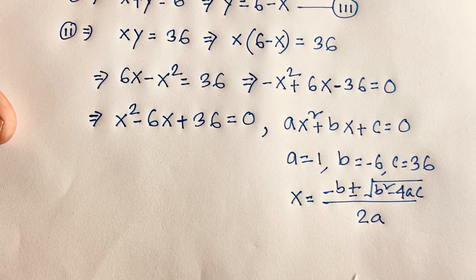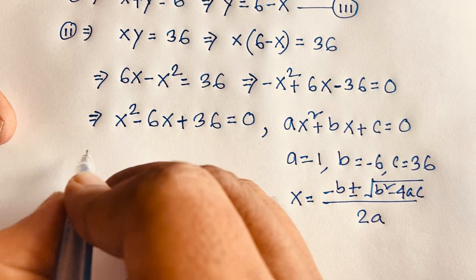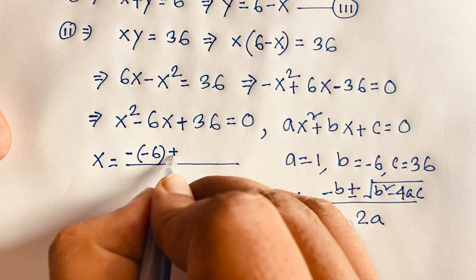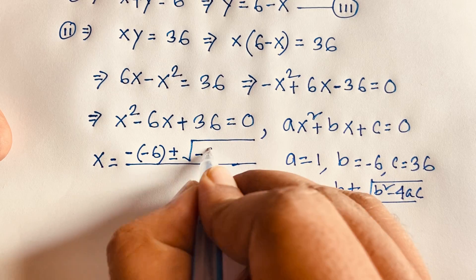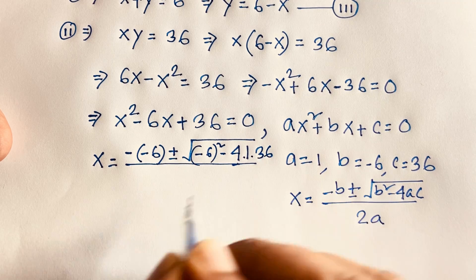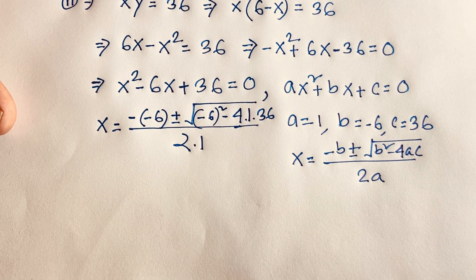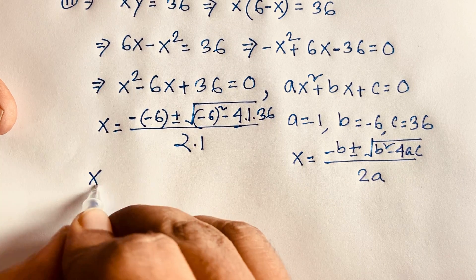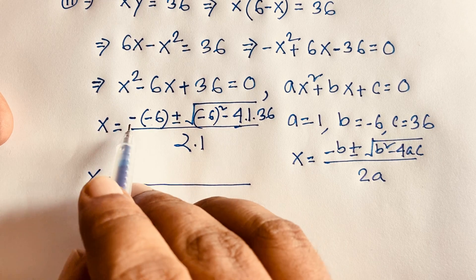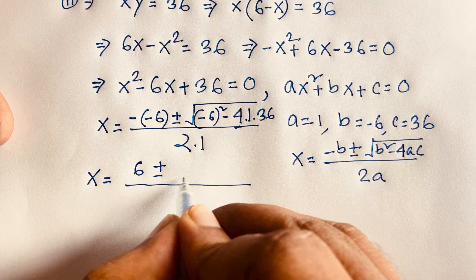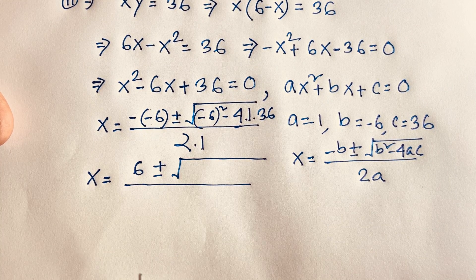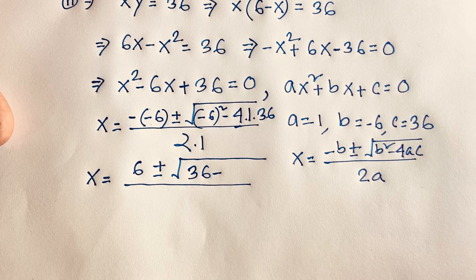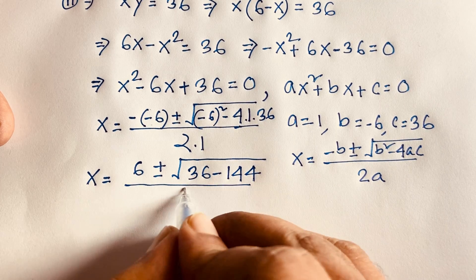According to this rule, in this quadratic equation, x is equal to minus b, which is minus of minus 6, plus or minus square root of (minus 6) whole squared minus 4 times 1 times 36, over 2 times 1. Now, minus 6 whole squared is 36, and 4 times 36 is 144, over 2.